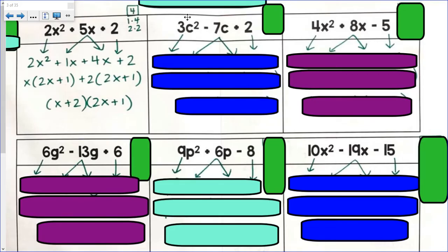3 times 2. a times c. So my ac value is 6. Factor pairs of 6 are 1 and 6, 2 and 3. Which factor pair of 6 is going to somehow give us a negative 7? If you said negative 1 and negative 6, you are correct.